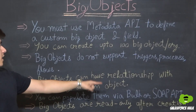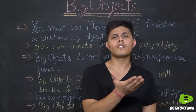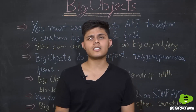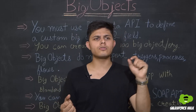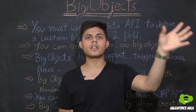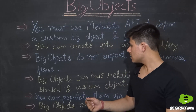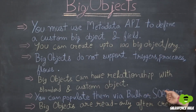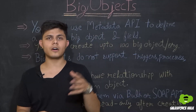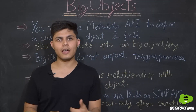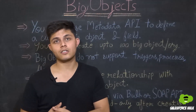Big objects can have relationships with standard and custom objects via a lookup relationship, allowing you to store information related to a specific record. You can populate big object records via Bulk API or SOAP API.